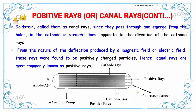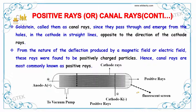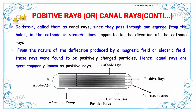Goldstein called them canal rays, since they passed through and emerged from the holes in the cathode in straight lines opposite to the direction of the cathode rays. From the nature of the deflection produced by a magnetic field or electric field, these rays were found to be positively charged particles.